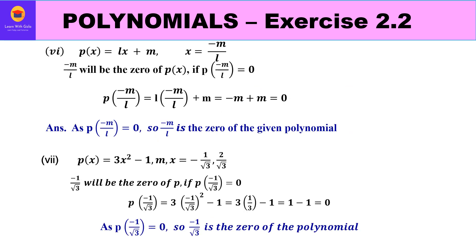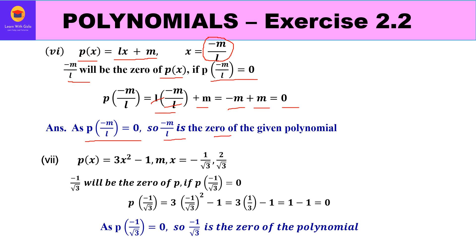For part six, p(x) = lx + m, verify x = -m/l: p(-m/l) = l(-m/l) + m = -m + m = 0. The l's cancel giving -m + m = 0. Since the value is 0, -m/l is the zero of the given polynomial.